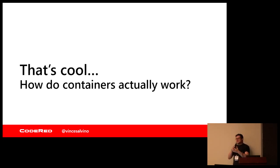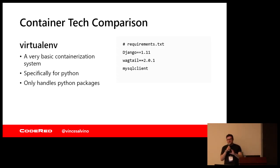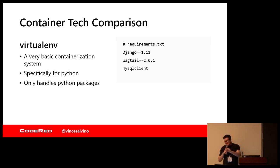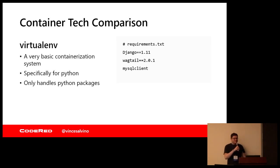So how do these containers actually work? Let's start with virtualenv. This is sort of like the basic level of containerization in a sense. Virtualenv only works with Python and it only handles pip packages — other Python libraries. The way it works is you can specify a specific version of, in this case, Django, Wagtail. Maybe you don't really care what version of MySQL client, so you're just going to use the latest. So I've sort of got a snapshot of what my dependencies are.